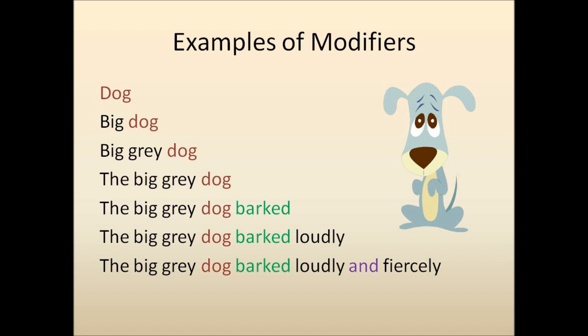The big gray describes the dog. Loudly and fiercely describes barked. And 'and' is the conjunction, which we covered last time when we talked about compound subjects and compound verbs.